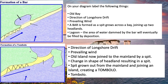Next, the tombolo. Again, there's a spit being formed in this area, and there's a piece of land or an island out in the sea. As the spit grows, it eventually joins the island. The direction of longshore drift causes the spit to get bigger and bigger until it connects the island to the mainland. This is what you call a tombolo — the spit has grown and joined the island to the mainland.